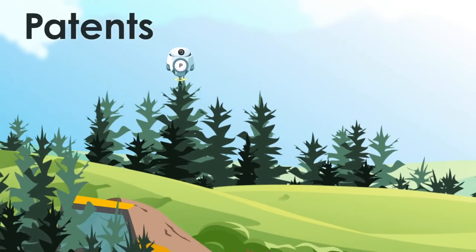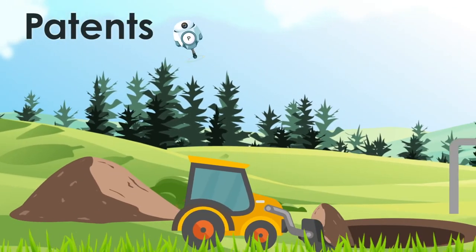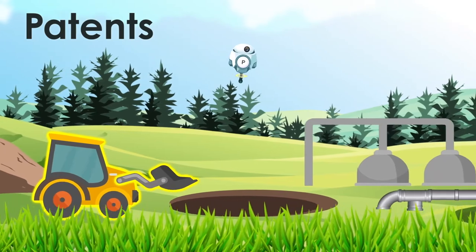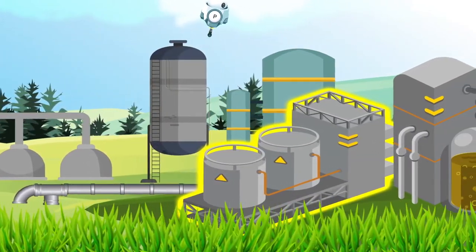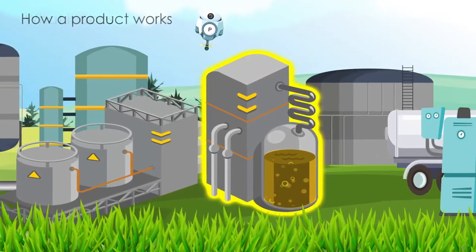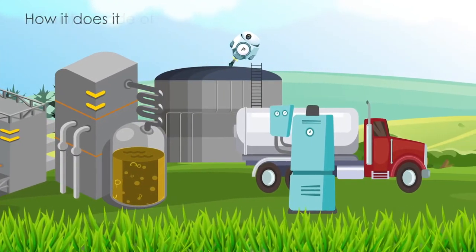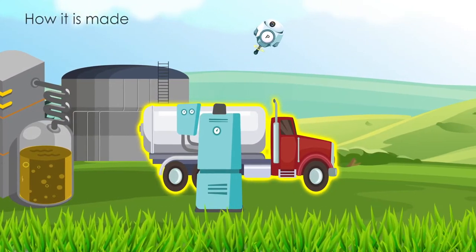Patents protect new, useful and non-obvious products, compositions, machines, processes or improvements on any of these. A patent will protect how a product works, what it does, how it does it, what it is made of and how it is made for 20 years.